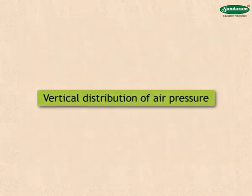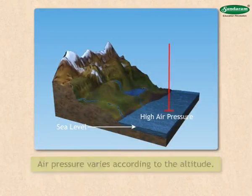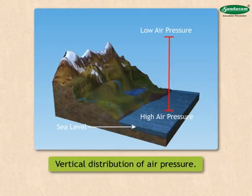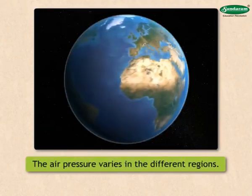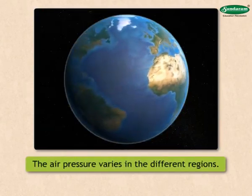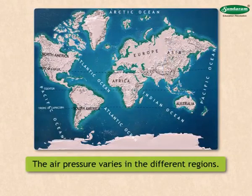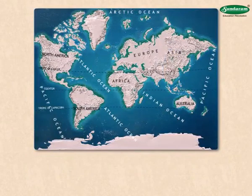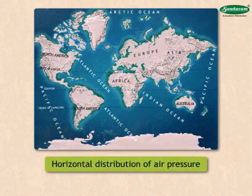Vertical distribution of air pressure. Air pressure varies according to the altitude. This is called the vertical distribution of air pressure. Horizontal distribution of air pressure. The air pressure is not the same horizontally over the surface of the earth. It varies in the different regions. This distribution of air pressure is called the horizontal distribution.